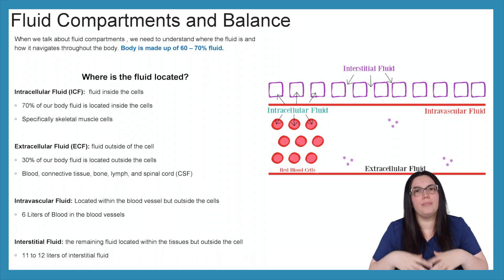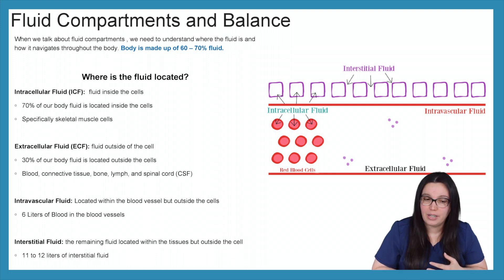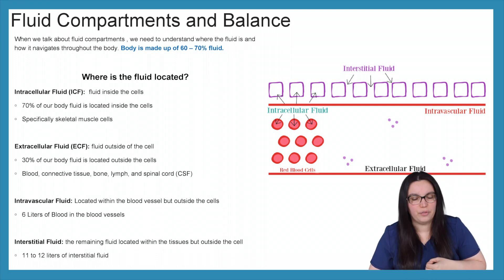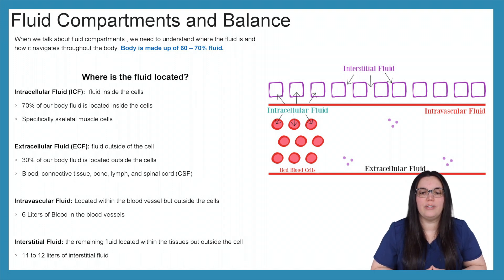That ECF can be broken down even further. So we have our intravascular fluid and our interstitial fluid. So our intravascular fluid is that fluid that's located in the blood vessel outside of our cells. And that's approximately six liters of blood inside of our blood vessels. Interstitial fluid is the remaining fluid that is located within the tissues but still outside of our cells. And that makes up between 11 to 12 liters of interstitial fluid.